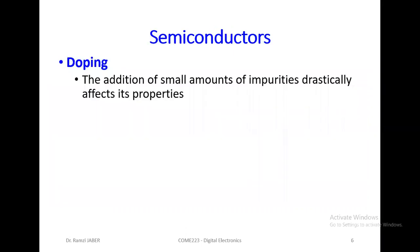Now we go to semiconductors and make something called doping. Doping is the addition of small amounts of impurity — impurity drastically affects its properties.